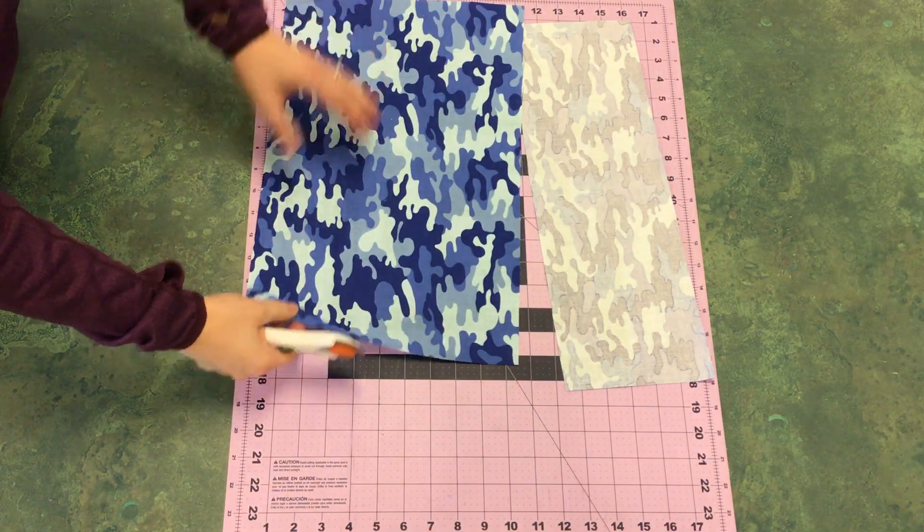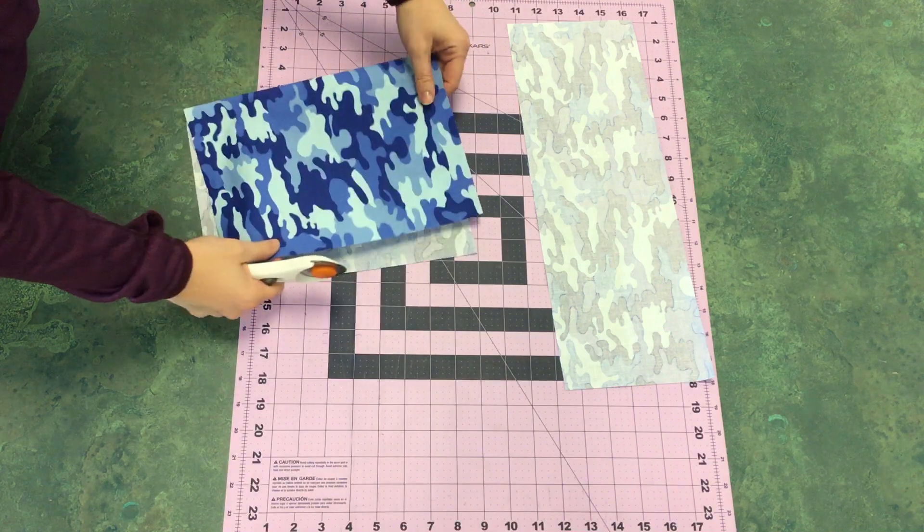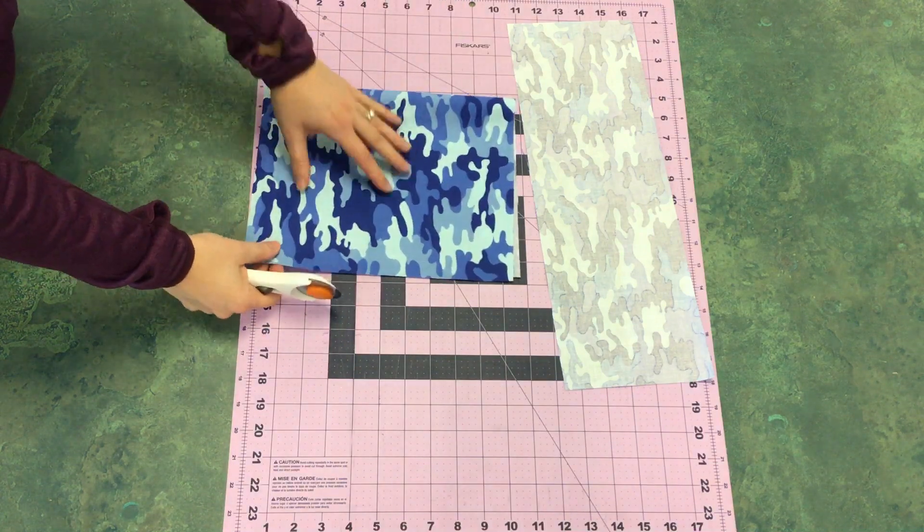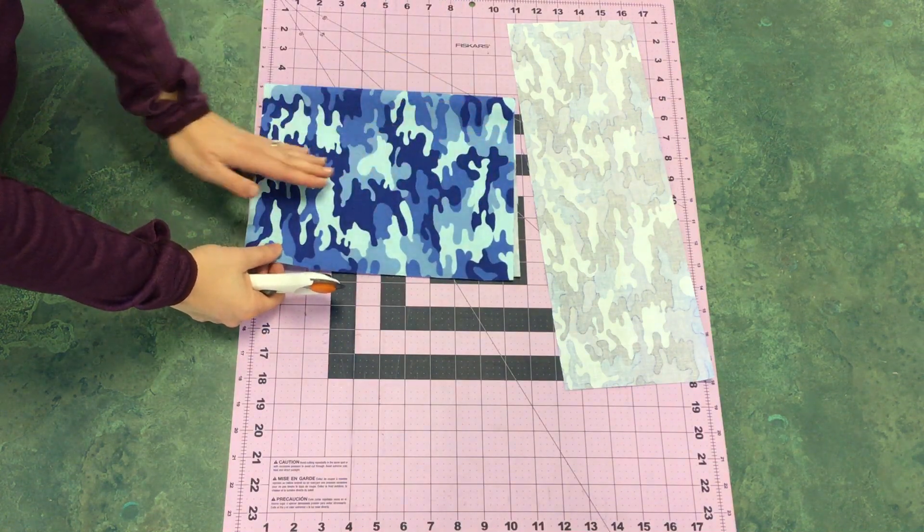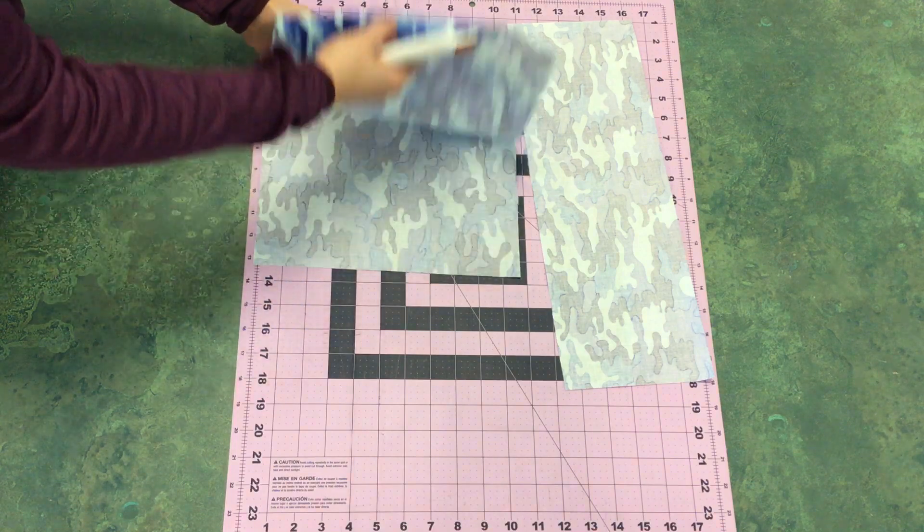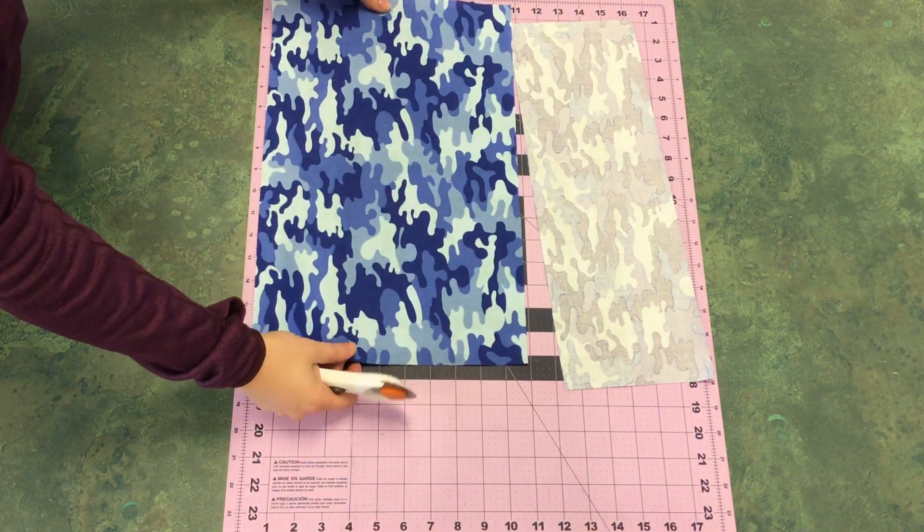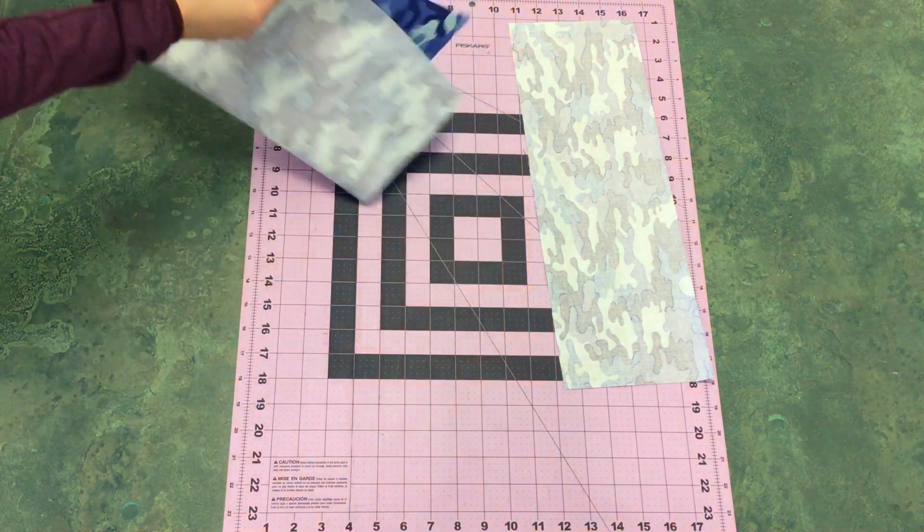So your pocket or your bag is going to end up looking like this. If you have a directional print, you want to make sure the direction is going up at this point. Hopefully you're watching the whole video before you actually start cutting.